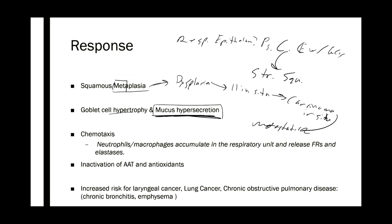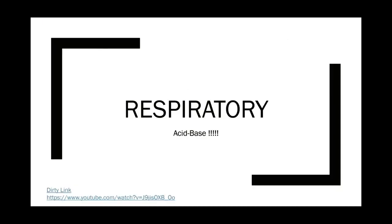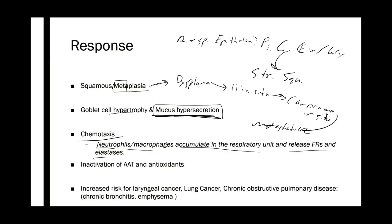Another very important effect: smoke is a huge chemotactic molecule. Chemotaxis leads to recruitment of immune cells and production of cytokines by those immune cells that recruit even more immune cells — a positive feedback mechanism. Neutrophils, macrophages, and in some cases eosinophils accumulate in the respiratory unit, releasing free radicals and elastases, causing DNA damage.